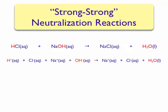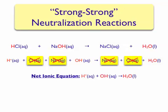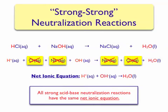To write our net ionic equation, we need to identify the spectator ions. For this reaction, the chloride ion and the sodium ion are both spectator ions. Therefore, the net reaction that occurs is the combination of the H+ ion and the hydroxide ion to form water. Also note: when writing complete and net ionic equations, we only use H+, not H3O+. This simplifies the process of writing a complete and net ionic equation.